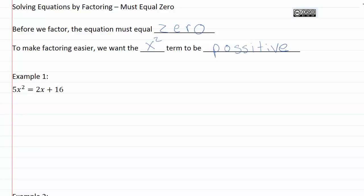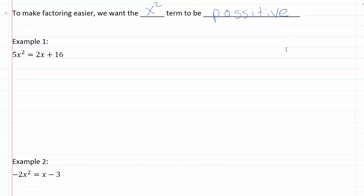So let's go ahead and look at some examples where we actually have to force the equation to have something equals zero. So right here in example one, we've got 5x² = 2x + 16. So we've got stuff happening on both sides here. In order to get a zero on one side, we want to move everything all to the same side.